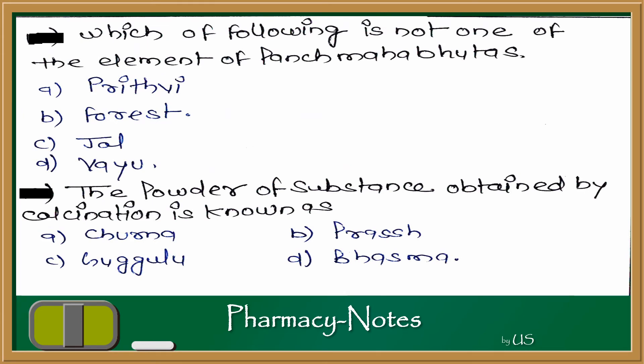Next question: which of the following is not one of the elements of the 5 Mahabhutas? The 5 elements of Ayurveda — Jal (water), Vaayu (air), Aakash (space), Agni (fire), and Prithvi (earth) — represent the whole universe. The options are Prithvi, Forest, Jal, and Vaayu. The answer is Forest, which is not one of the elements of the 5 Mahabhutas.